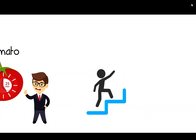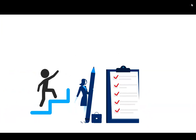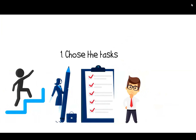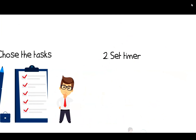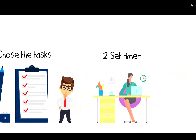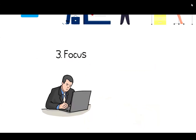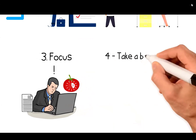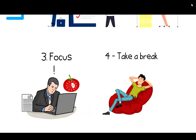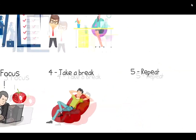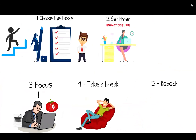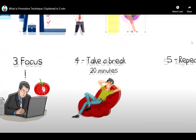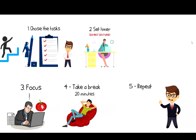Here are the steps to improve your focus using the Pomodoro technique. Step 1: Choose the task — this gives you one focus point. Step 2: Set timer — set your timer for 25 minutes, close all unnecessary tabs, and turn on do-not-disturb mode on your phone. Step 3: Focus — work on the chosen task until the timer sounds; if distracted by a thought, write it down and get back to work. Step 4: Take a five-minute break once the 25 minutes are over. Step 5: Repeat — after the break, do another 25-minute session. After four pomodoros, take a longer break of 20 minutes.